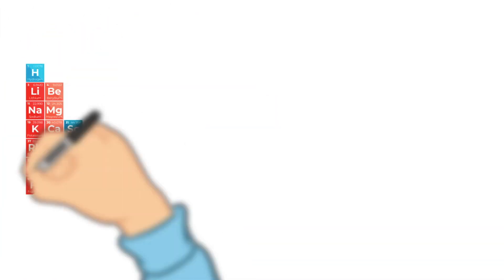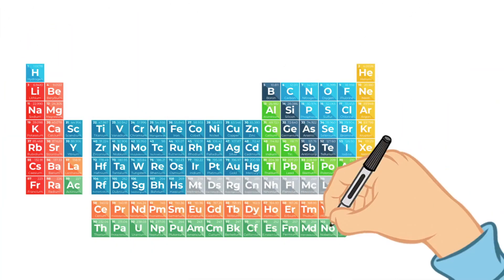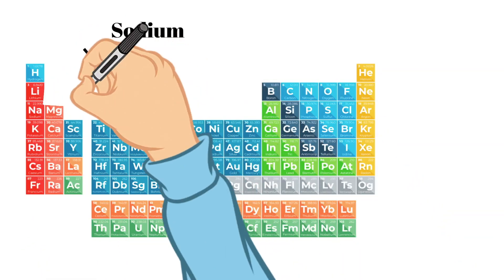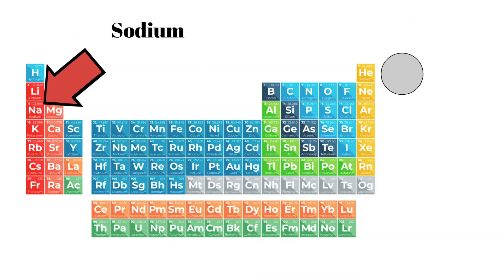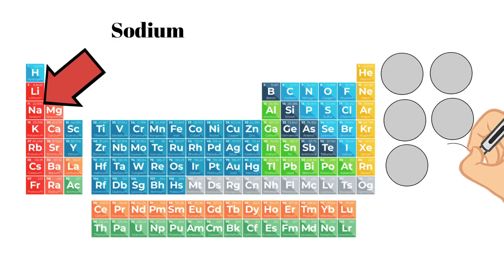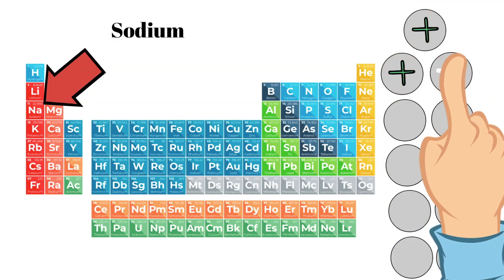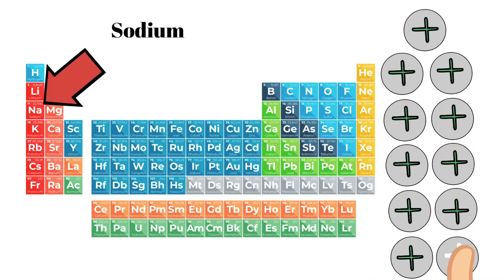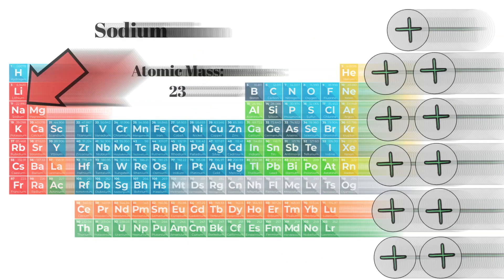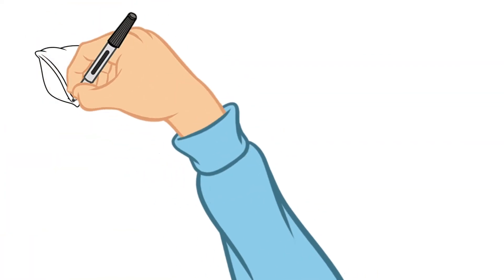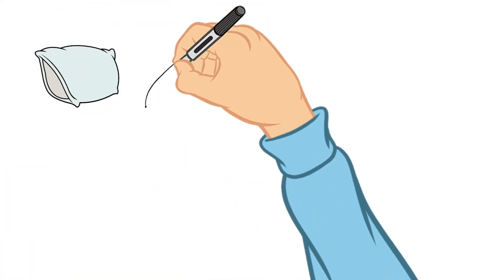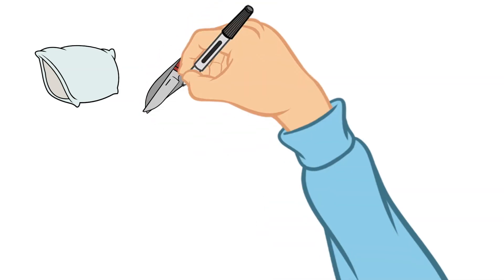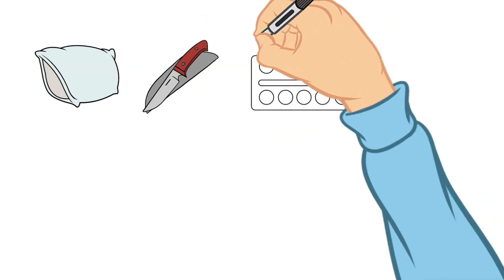Let's move to the next element and that is sodium. Sodium has an atomic number of 11, meaning there are 11 protons in the nucleus and an atomic mass of about 23. Sodium by itself is also a very reactive element. It is in its pure form a soft metal that can be easily cut. It is a silvery white color and burns in a yellow flame.